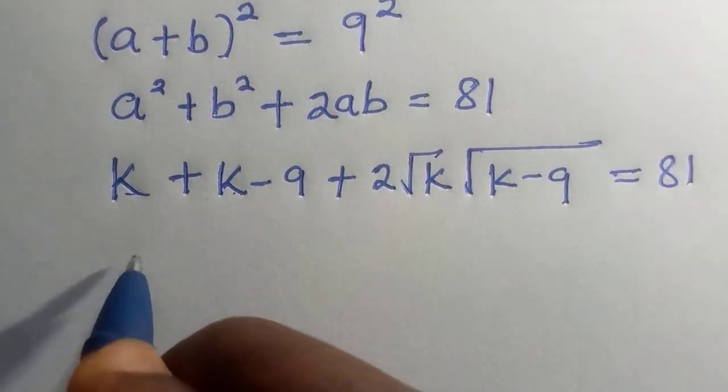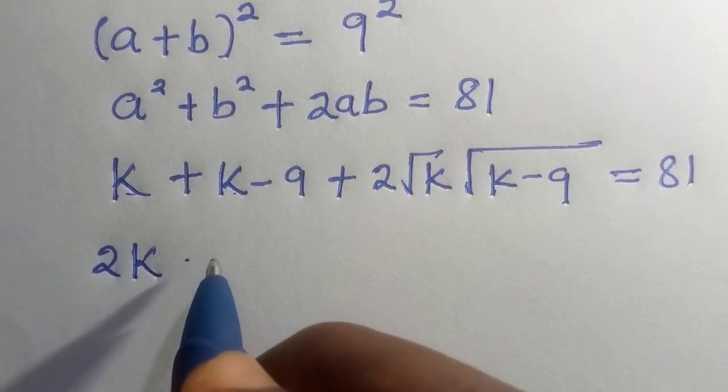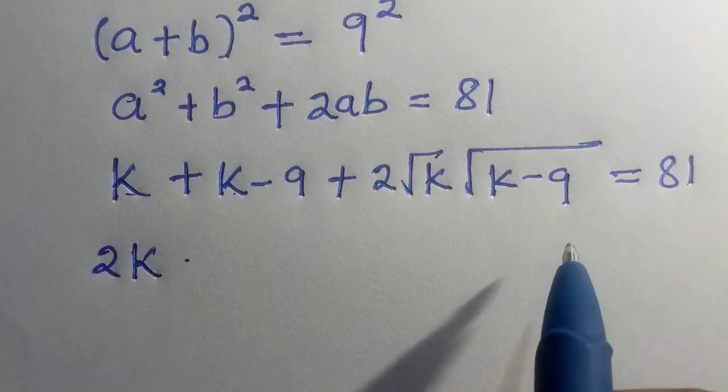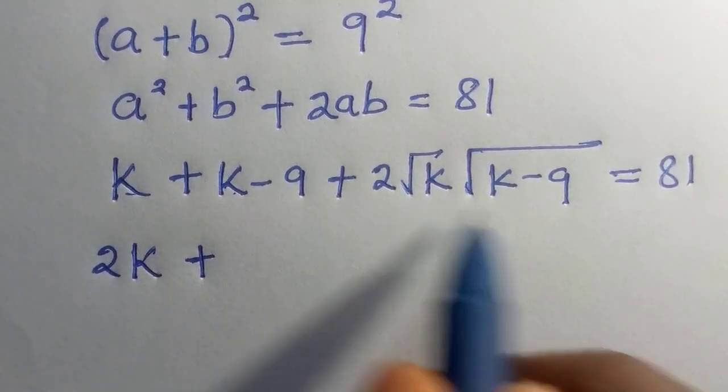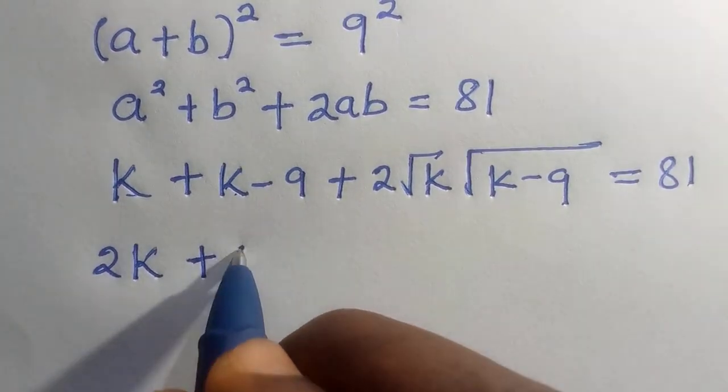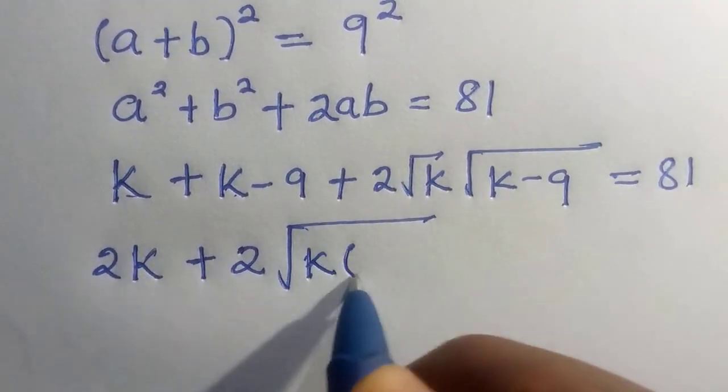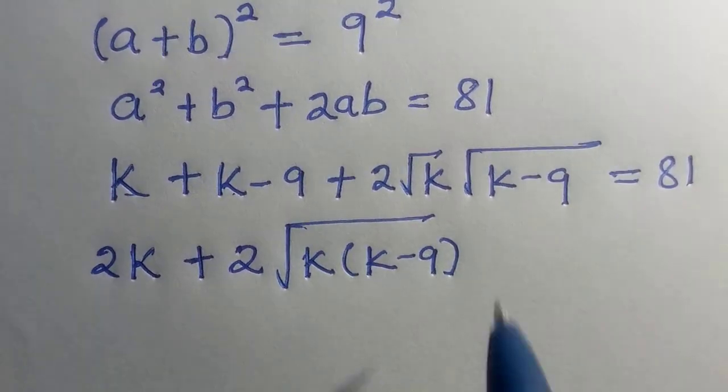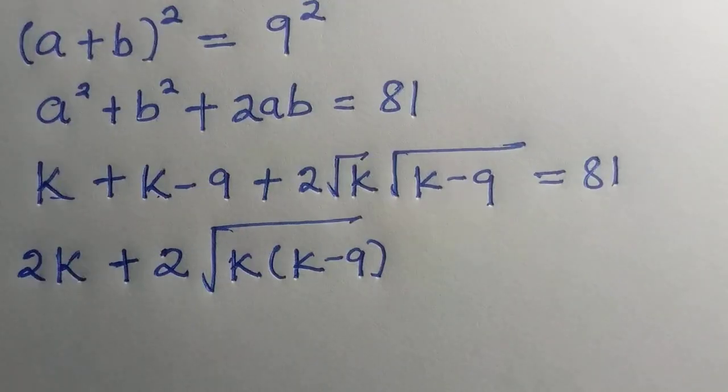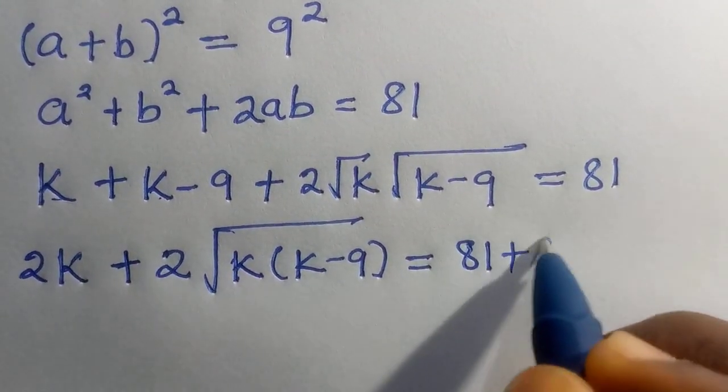So, k plus k gives us 2k. Then, we take 9 to other side plus, here we have root k and root k minus 9. This gives us 2 root k into bracket of k minus 9. This is by property of surds. Everything equals 81 plus 9.